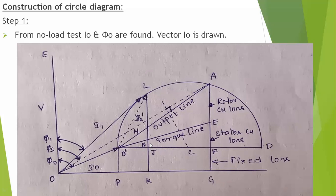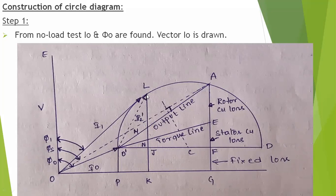This is N, this is J — JN. Next one: rotor copper loss. Rotor copper loss is root 3 VL MN — this one MN. Stator loss is NJ and rotor copper loss is MN, root 3 VL MN. Next, fixed losses — this one JK, root 3 VL JK. Next, mechanical output is ML, root 3 VL ML.